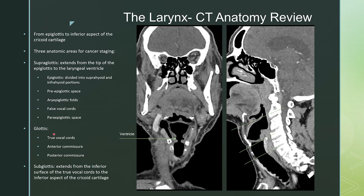The glottis consists of the true vocal cords, the anterior and posterior commissure, anteriorly and posteriorly along the cords. The subglottis extends from the inferior surface of the true vocal cords, which you see best on the sagittal view, to the inferior aspect of the cricoid cartilage.